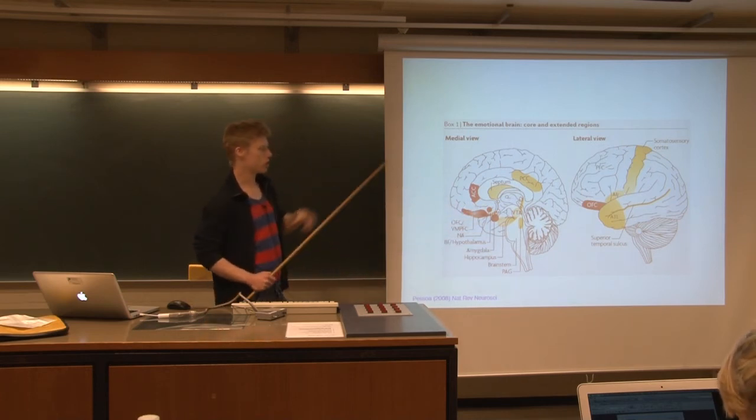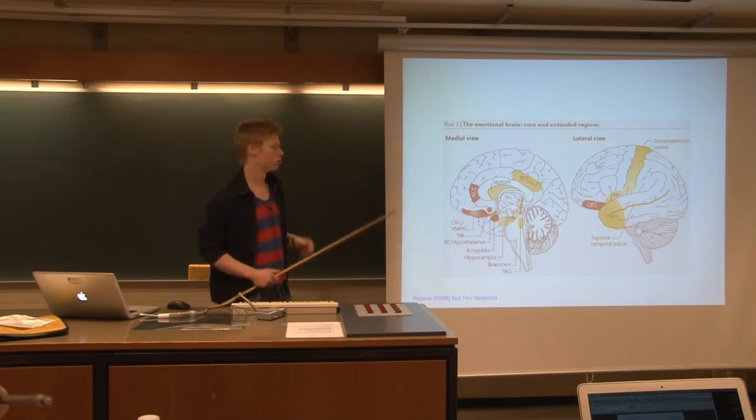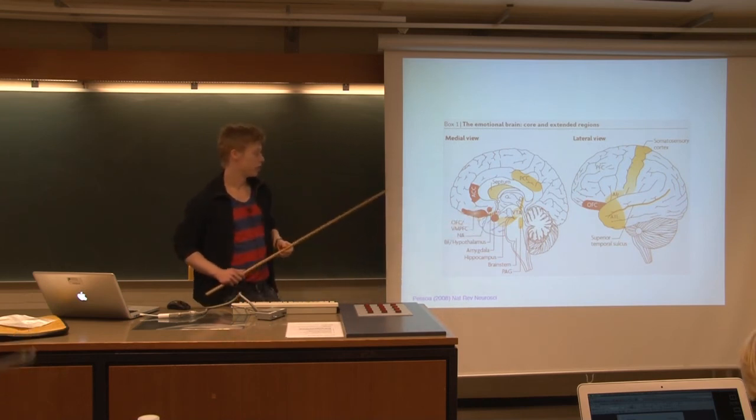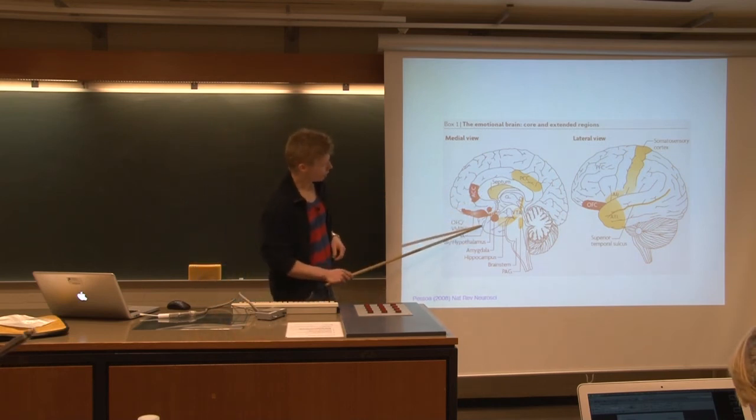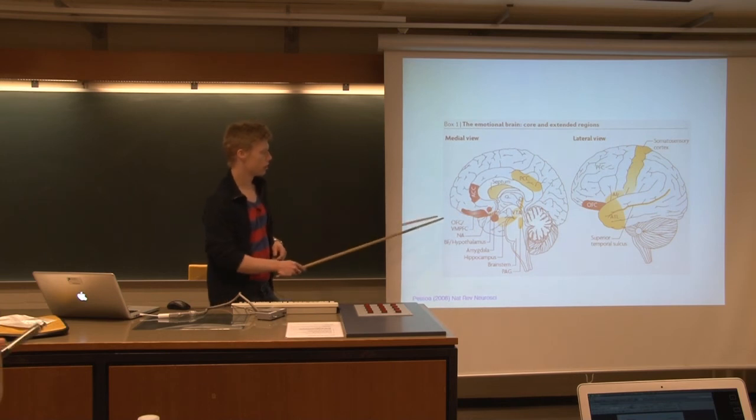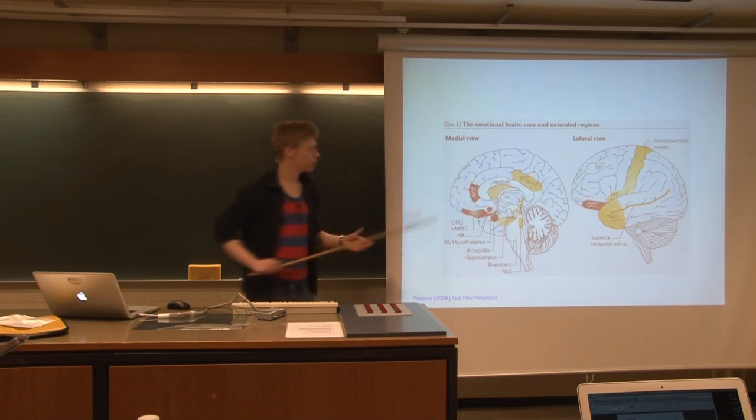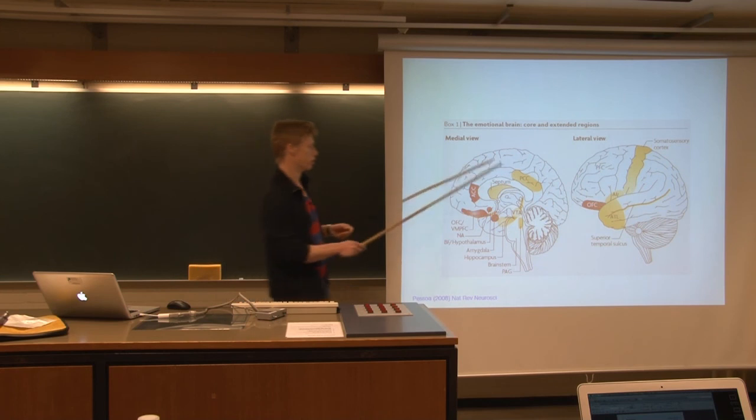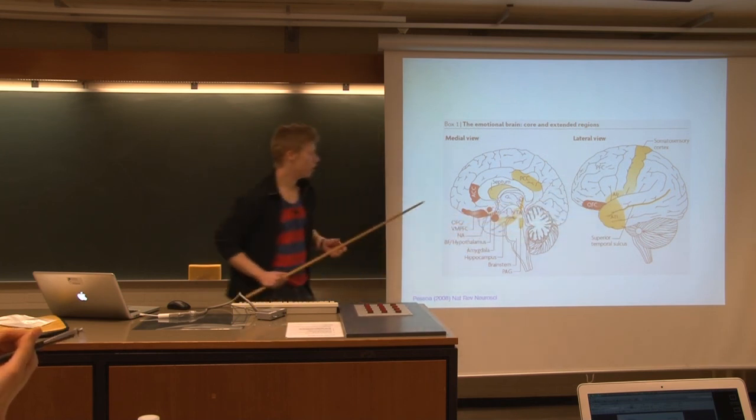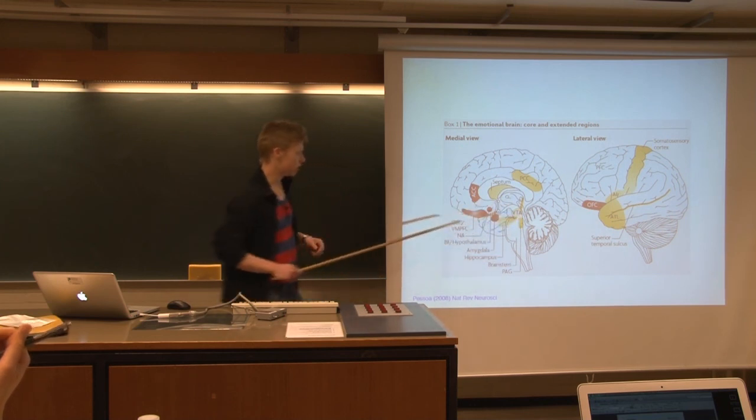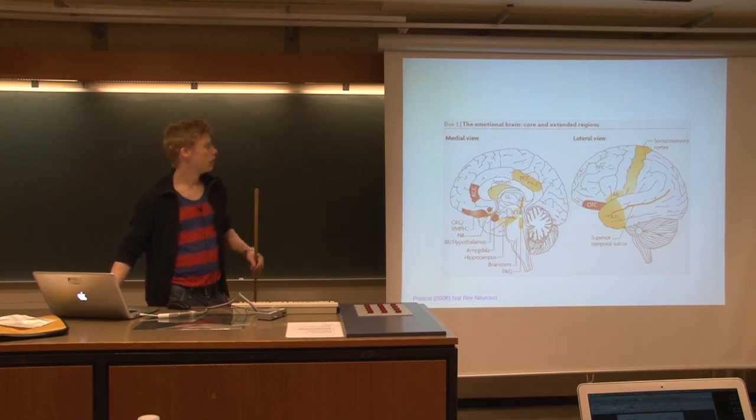The focus on the temporal lobe as a single region for emotional processing began to shrink. Today, we know that the amygdala is highly important, along with the hypothalamus and cortical regions like the orbitofrontal cortex and anterior cingulate cortex. Extended regions involved in emotional processing include the posterior cingulate, somatosensory cortex, temporal pole, superior temporal sulcus, brainstem nuclei, and ventral tegmental area.